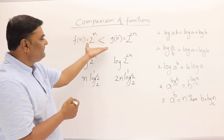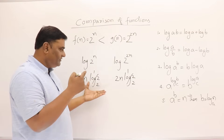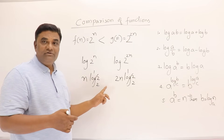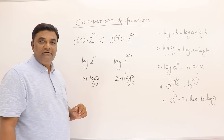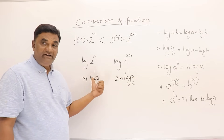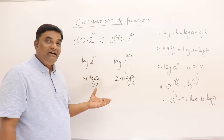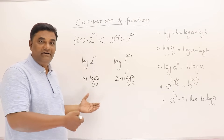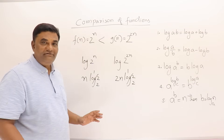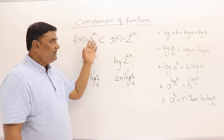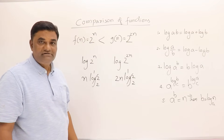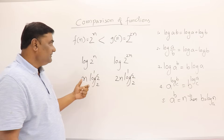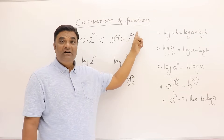This example illustrates an important rule: after applying log, do not cancel or ignore coefficients. Directly from the original functions you can drop coefficients, but once you've applied log and changed the functions, removing coefficients will give a wrong answer. So from the log comparison, 2n > n, confirming 2^(2n) — which equals 4^n — is greater than 2^n.